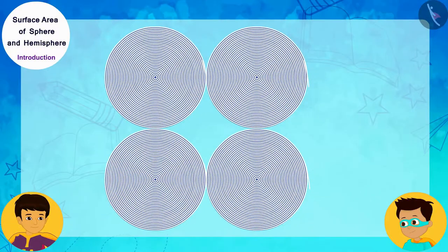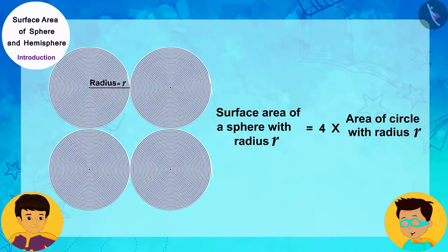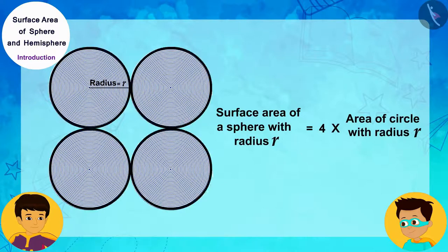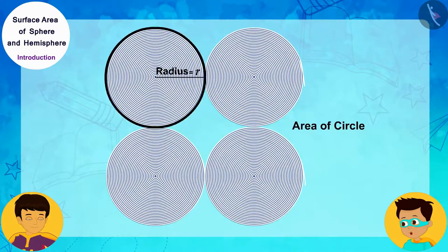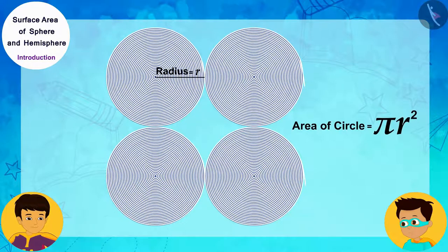I get it! This means the surface area of a sphere with radius R is equal to the area of four circles with radius R. And the area of a circle of radius R is pi times R square. Oh, wow, Manas!